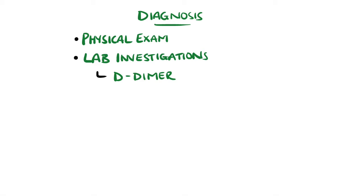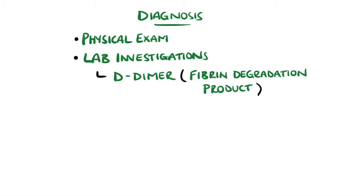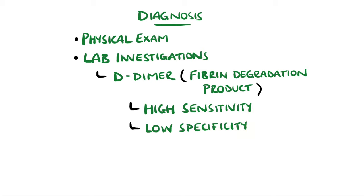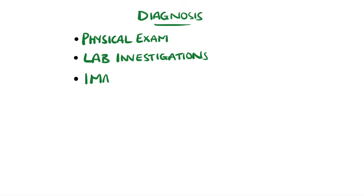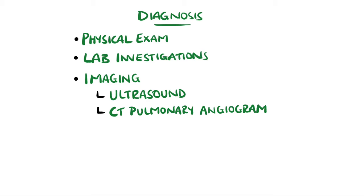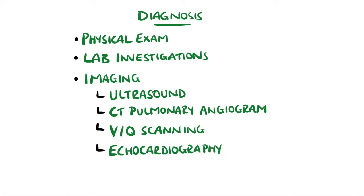Lab investigations include a D-dimer, which is a breakdown product of fibrin, the main component of a thrombus. In cases of venous thromboembolism, there are high levels of D-dimer as fibrinolysis is activated to break down the thrombus. D-dimer is highly sensitive but has poor specificity, meaning it can be elevated for other reasons, but if it is low then a pulmonary embolism is unlikely. Imaging typically involves an ultrasound to assess deep vein thrombosis by evaluating compressibility of the deep veins. CTPA is used to look at perfusion of the pulmonary arteries, and ventilation-perfusion scanning can show parts of the lung being well ventilated but poorly perfused. Echocardiography can evaluate the degree of right ventricular dysfunction.